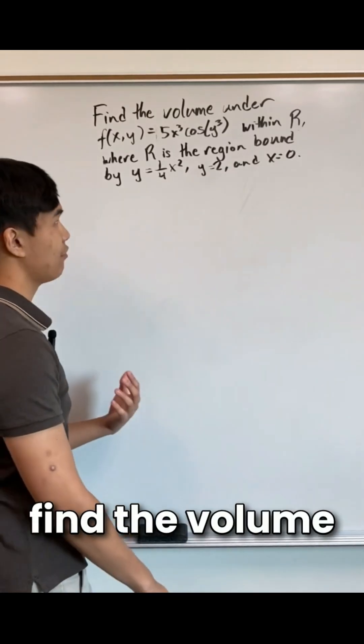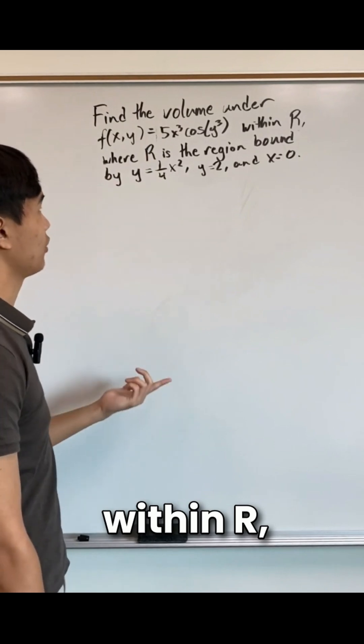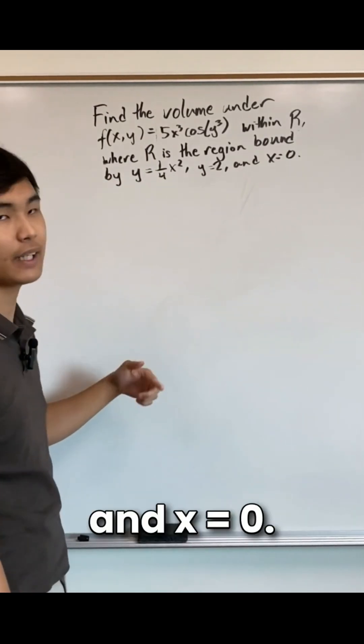Let's set up a double integral. We're asked to find the volume under the surface 5x cubed cosine of y cubed within r, where r is the region bound by y equals one fourth x squared, y equals 2, and x equals 0.